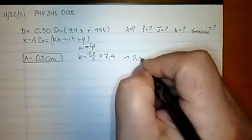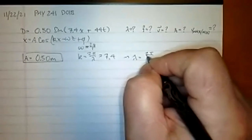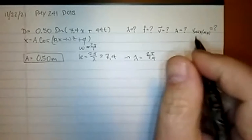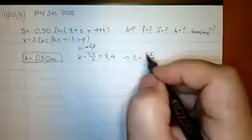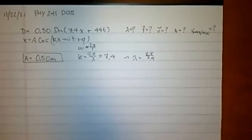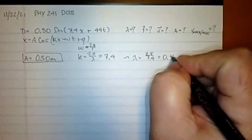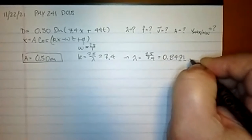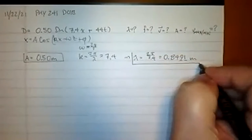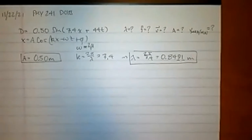Since k = 7.4 rad/m, we get λ = 2π/7.4. Calculating: 2 × 3.14159 ÷ 7.4 = 0.849 meters. I'm carrying two extra significant figures. That's the wavelength.